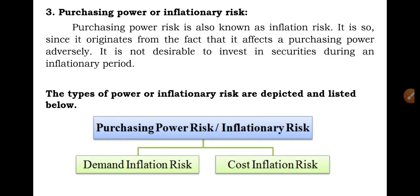These are the different types of systematic risk. Systematic risk means uncontrollable risk by the organization and macro in nature. We can't control it as it is influenced by external factors. Systematic risk is one part of total risk, the other part being unsystematic or controllable risk. Systematic risk is caused by factors beyond the control of a specific company or individual, and is caused due to external factors of an organization. Hope you understand. Thank you all. Jai Shri Gurudev. Please do subscribe, share and comment.